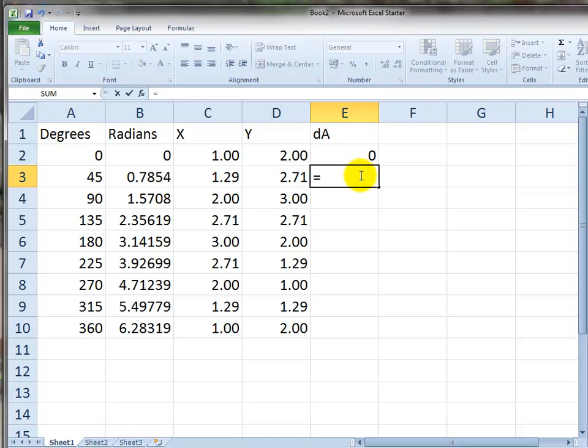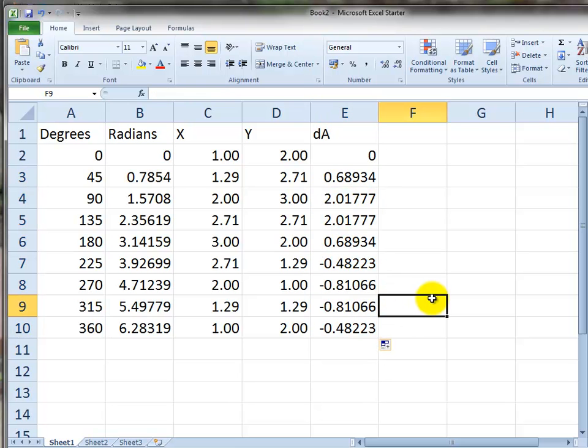And the area here is half times the sum of the heights, which is the average height, times the width, which is that minus that. Add them, drag it down. Some of them are positive, some of them are negative.